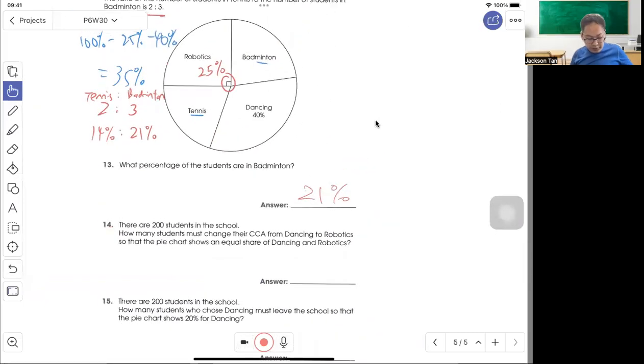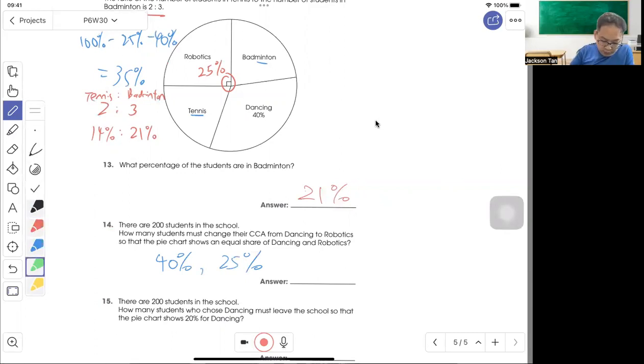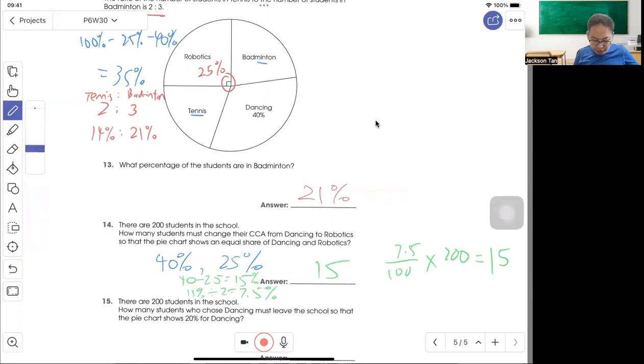Next, there are 200 students in the school. How many students must change the CCA from dancing to robotics? So they saw the equation of dancing and robotics. So dancing itself is 40%, robotics is 25%. So want to change, basically just give 7.5%. Because 40 minus 25 is 15 divided by 2, that's 7.5%. So let's work out 7.5% out of 100, 200 students. So 15 students must change. So once 7.5% go, this will be equal. This will become 32.5%.